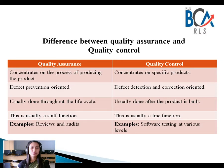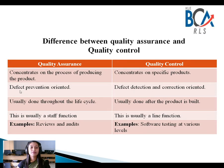Next comes the difference between quality assurance and quality control. Quality assurance concentrates on the process of producing the product, while quality control concentrates on the specific products. Quality assurance is defect prevention and prevention-oriented, whereas quality control is defect detection and correction oriented.